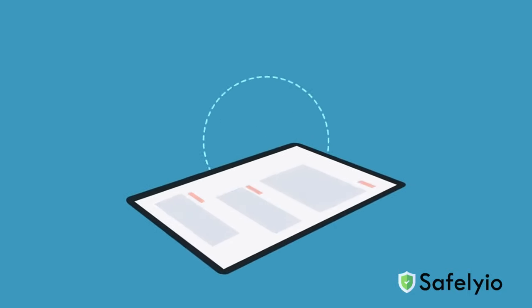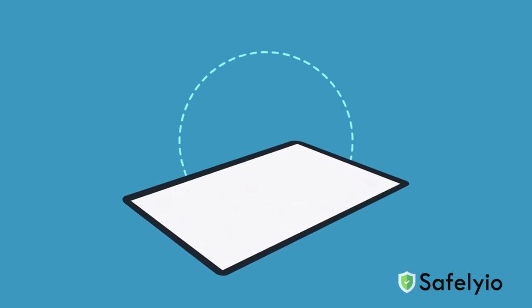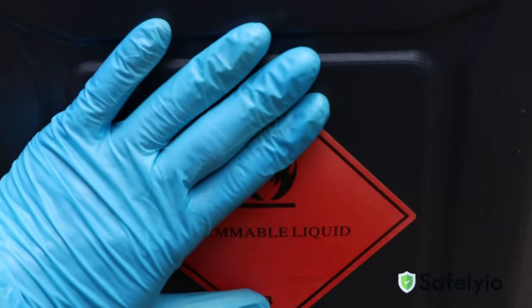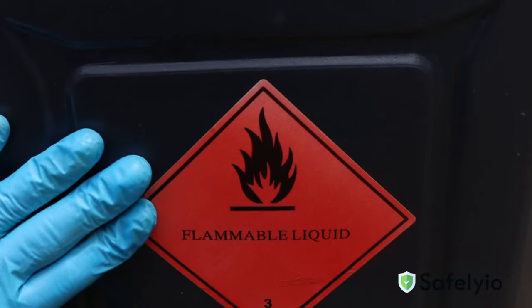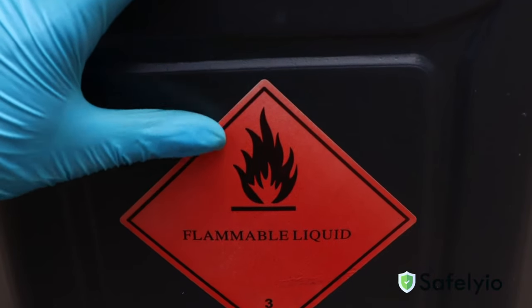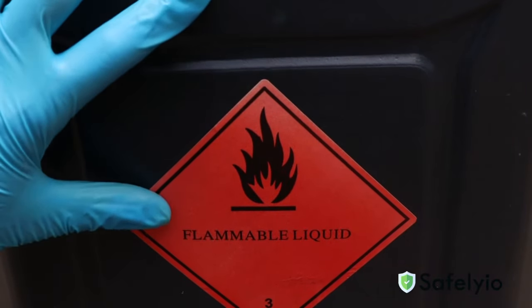Safety data sheets are valuable resources for several key reasons. These documents are used to provide hazard communication. They contain detailed information about the dangers of a chemical, hazard pictograms, and safe handling procedures that allow employees to understand and mitigate risks safely. An SDS also outlines hazards such as flammability, toxicity, or reactivity, which allows employees to make informed decisions.